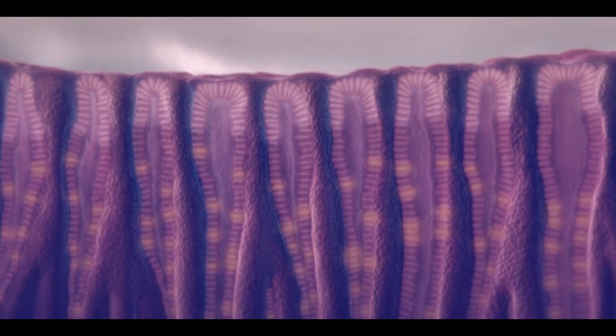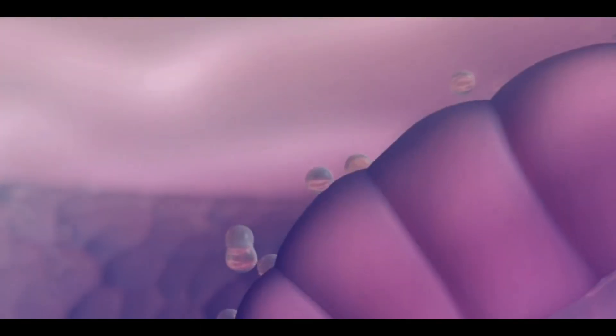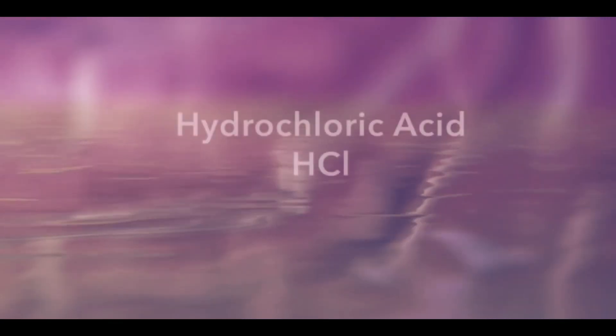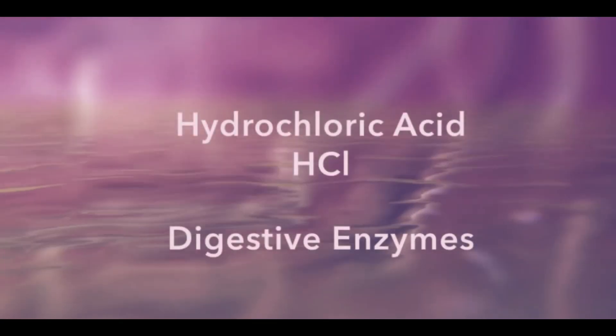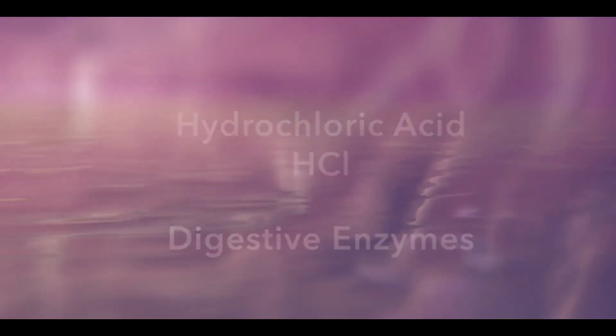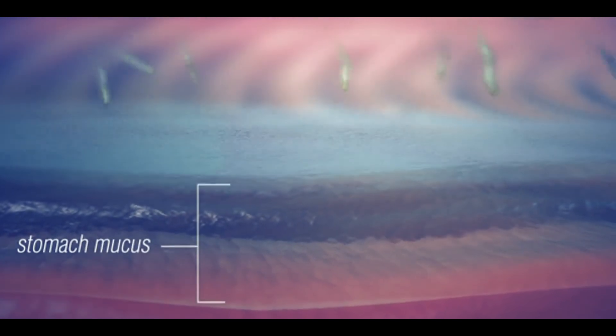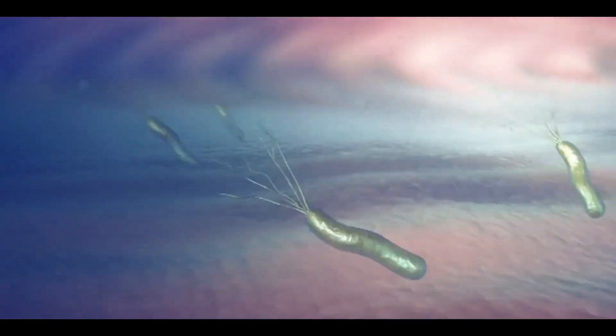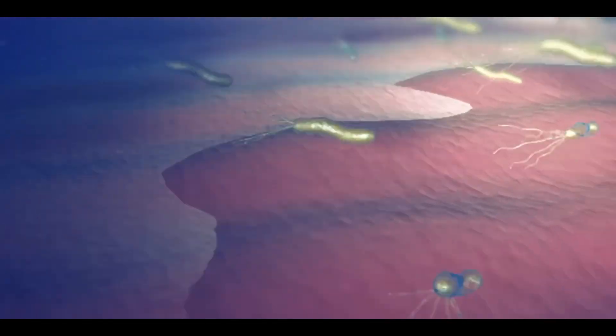The cells present in our stomach lining secrete mucus that protects the stomach from the corrosive effects of its own HCl. But H. pylori bacteria starts to feed on the mucus. As a result, the amount of mucus decreases. This causes the mucus to thin in some regions.